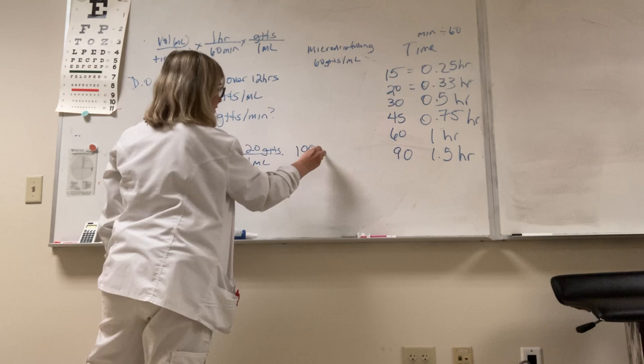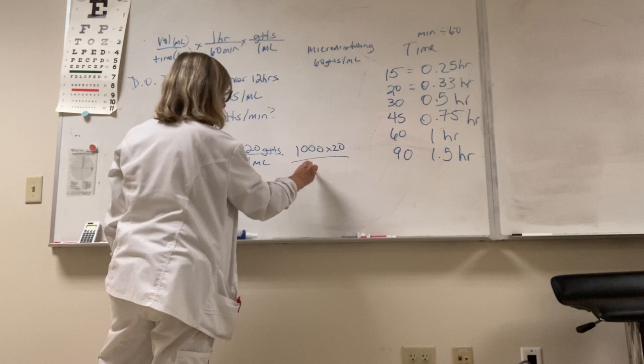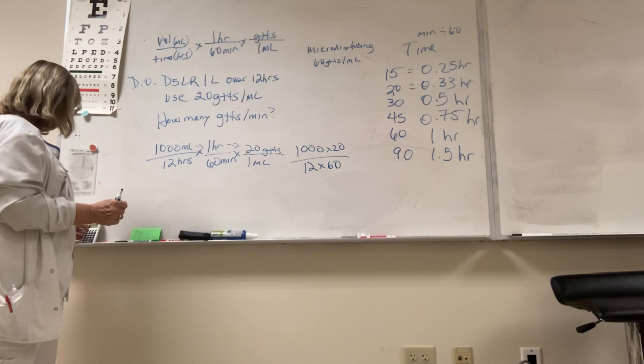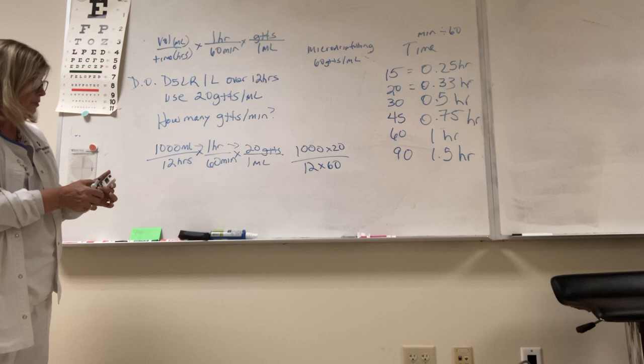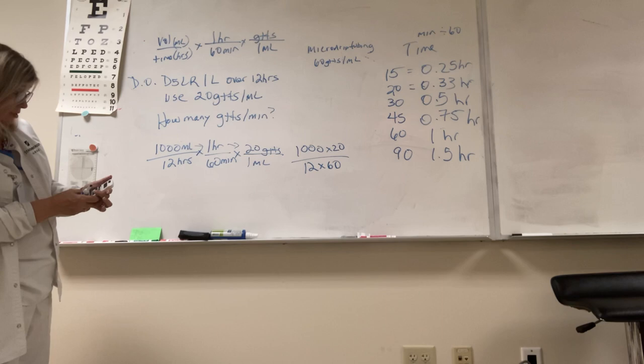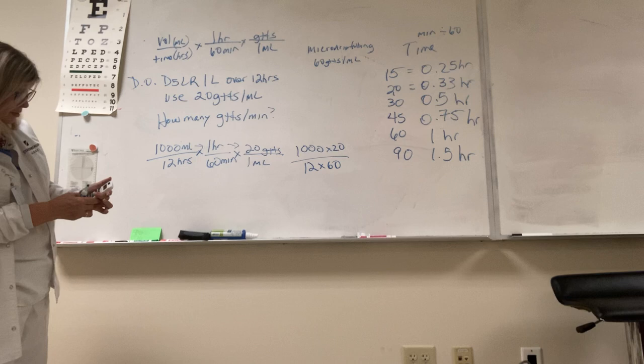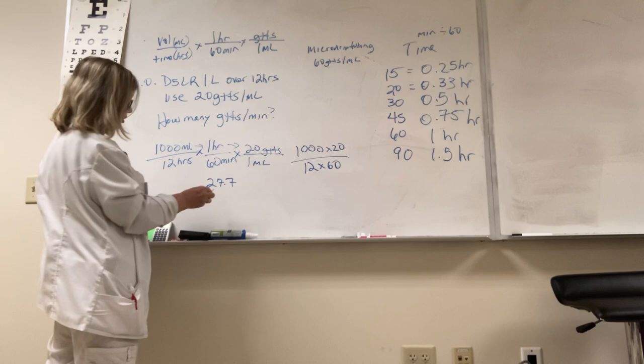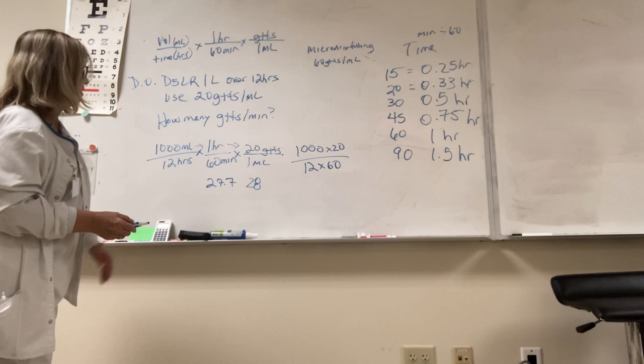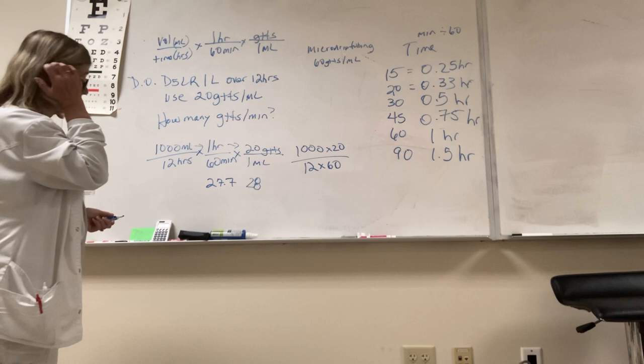When it says per milliliter, that's an implied one as we talked about. So now I'm just going to multiply straight across: 1000 times 20, which would be 20,000, divided by 12 times 60. So when you do the math, 12 times 60 is 720. I'm going to have 20,000 divided by 720, which equals 27.777. This is really important - we can't have a partial drop, it's hard enough to see a regular drop, so we're going to round this up to 28. For the purposes of this test, it already asked you how many drops per minute, you just have to put the number - put 28.